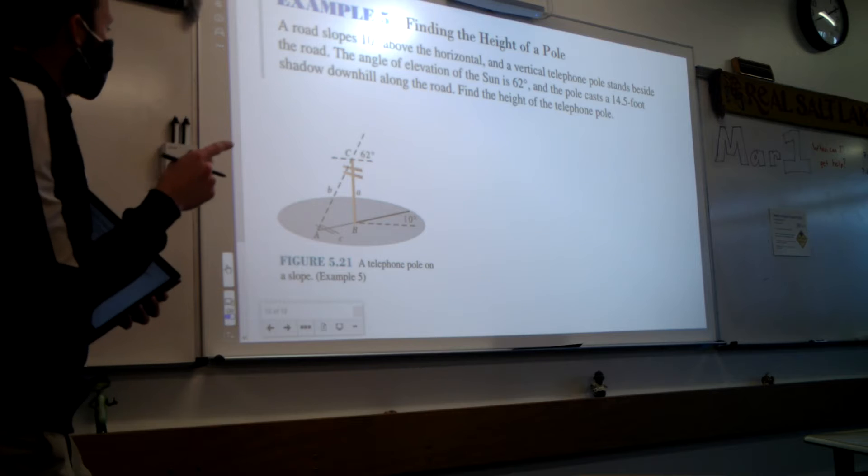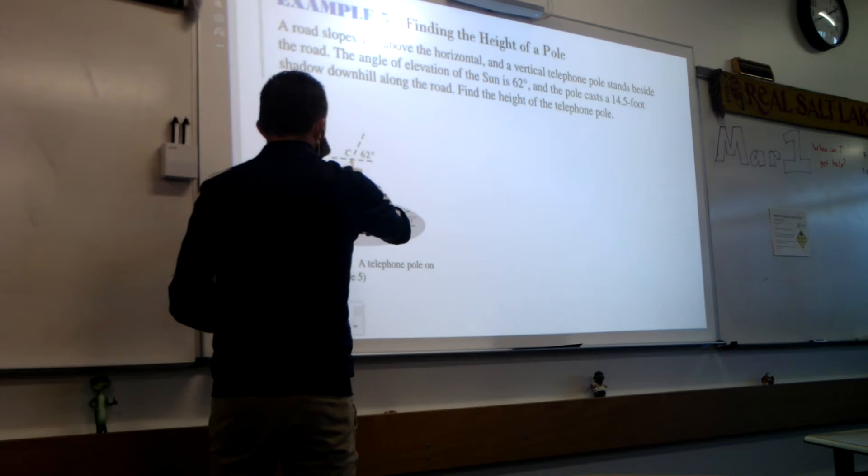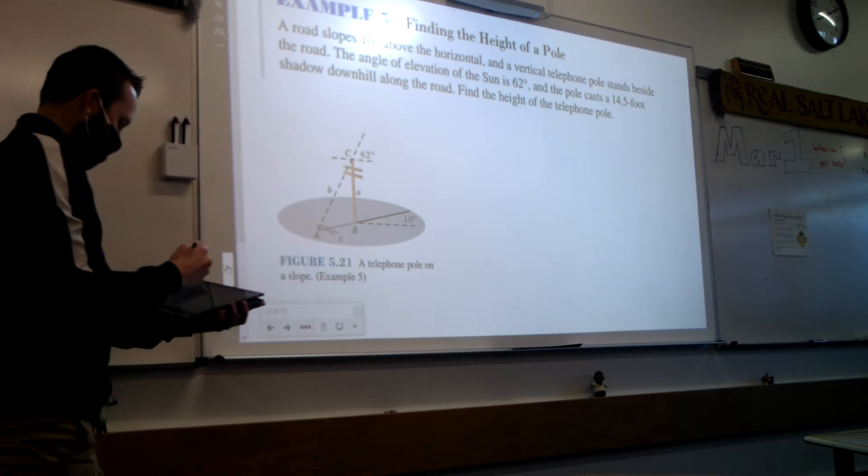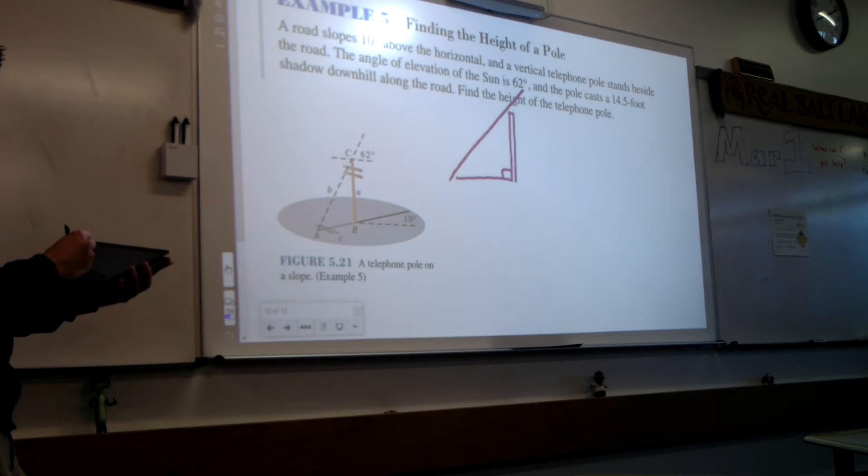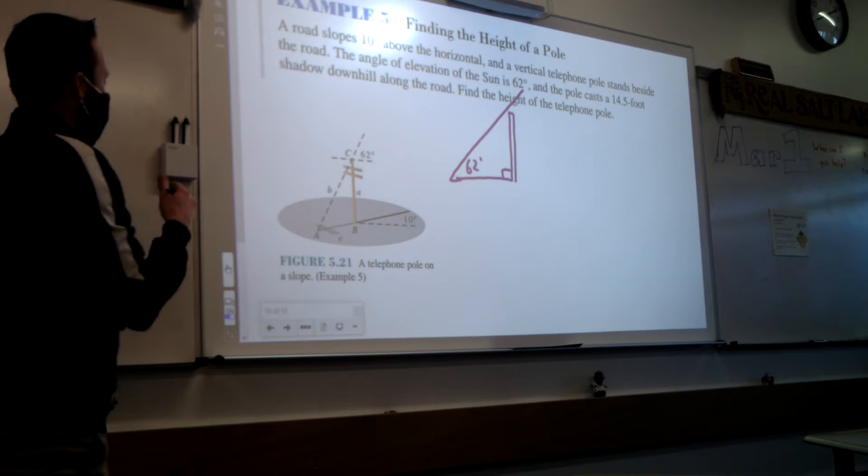The assumption we're doing when we make that is that the flagpole is going off the ground at 90-degree angle and that the ground is flat. If that were the case, it would look like this. Here's the power line and it's making a 90-degree angle. Now we're told that the angle right here is 62 degrees.